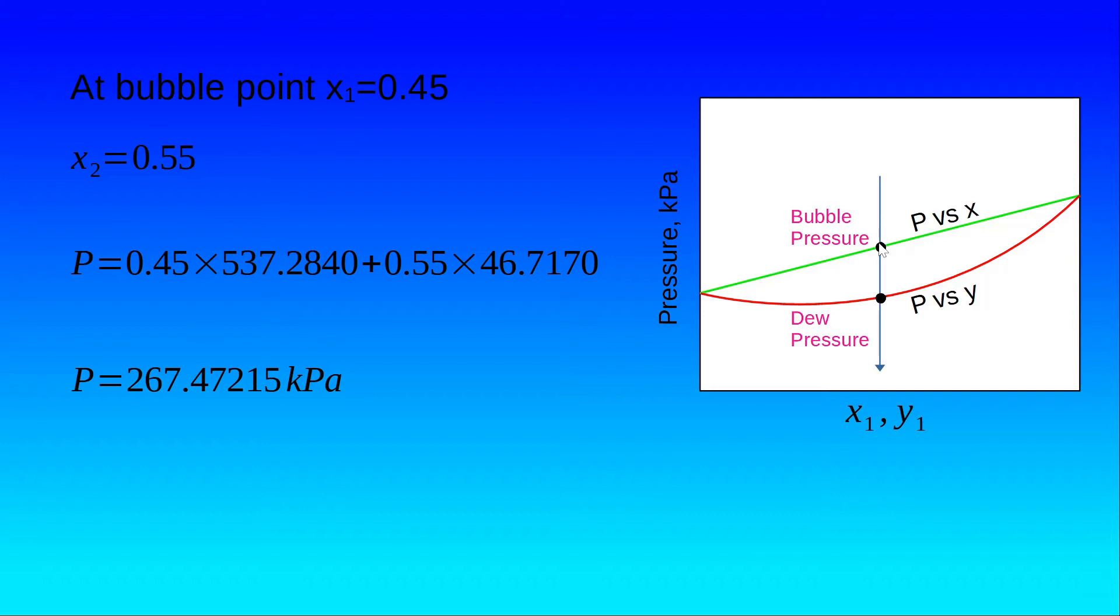There will come a point where the first drops of vapor will form in the liquid body. That point is known as the bubble pressure. We are doing this reduction in pressure at constant temperature. That should be noted.